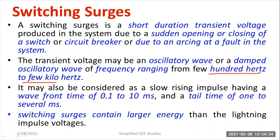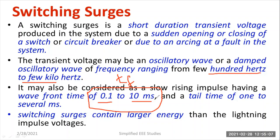The nature of switching surges is similar to an impulse waveform. The wave tail time is equal to 10 milliseconds and the wave front time is in the range of 0.1 to 10 milliseconds — this is referred to as TF. The wave tail time is in another range: one to several milliseconds. Those are the wave front and wave tail times of switching surges.